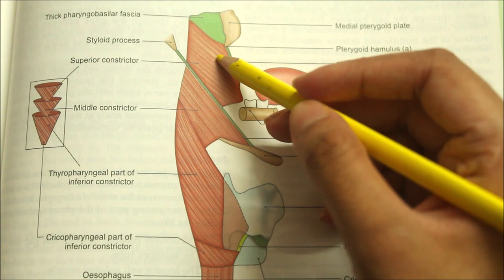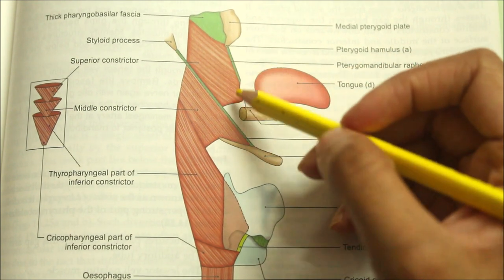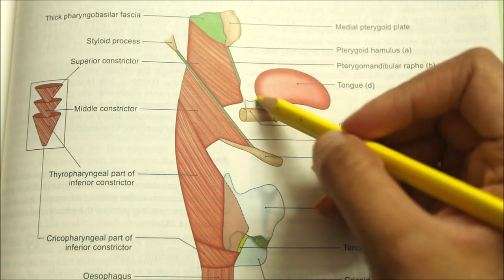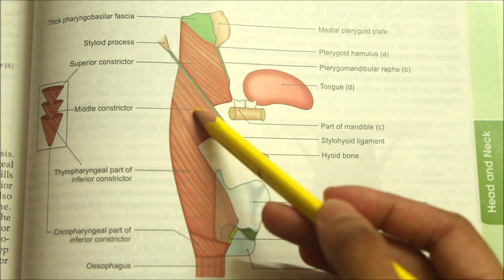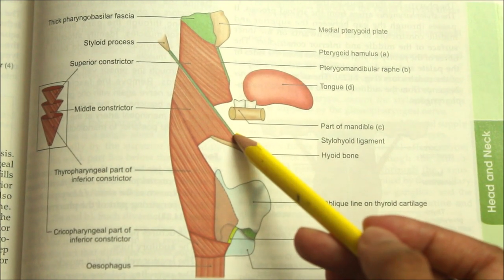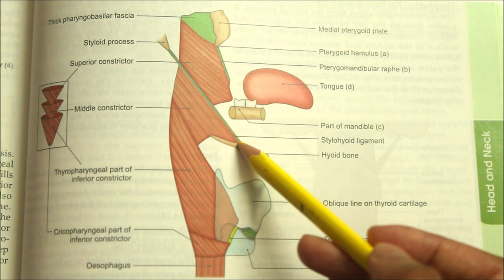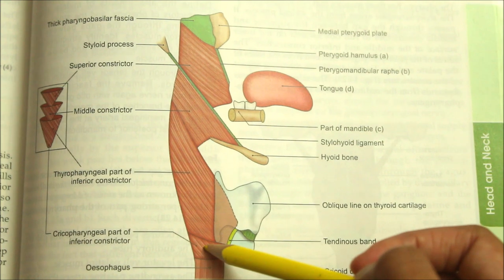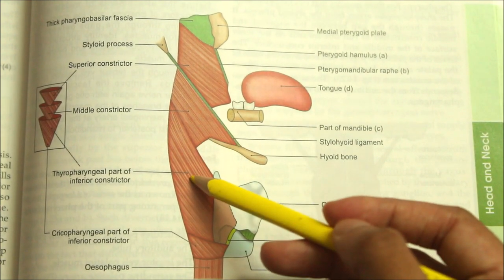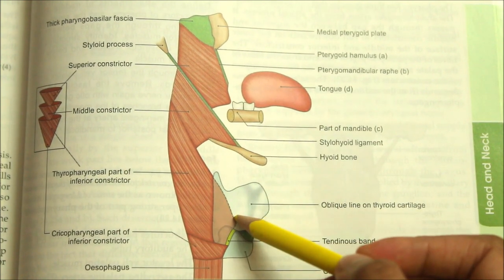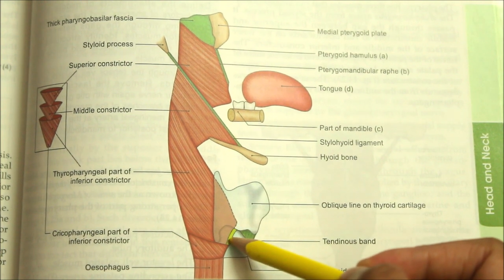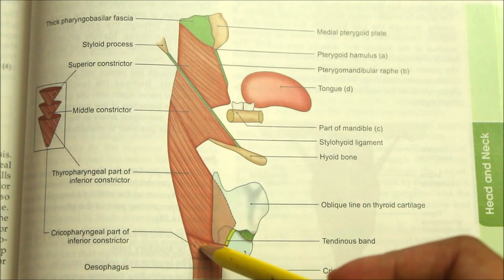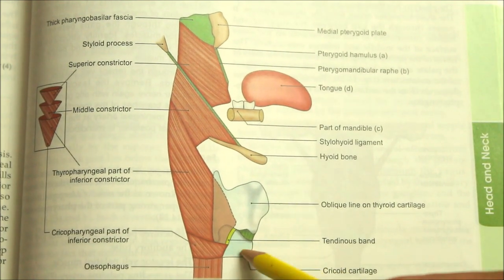The superior constrictor takes origin from the pterygoid hamulus, the pterygomandibular raphe, the medial surface of the mandible and the side of the posterior part of the tongue. The middle constrictor takes origin from the lower part of the stylohyoid ligament, the lesser cornu of the hyoid bone and the greater cornu of the hyoid bone. The inferior constrictor has two parts: a thyropharyngeal part and a cricopharyngeal part. The thyropharyngeal part arises from the oblique line on the lamina of the thyroid cartilage, the tendinous band that crosses the cricothyroid muscle and the inferior cornu of the thyroid cartilage. The cricopharyngeal part arises from the cricoid cartilage behind the origin of the cricothyroid muscle.